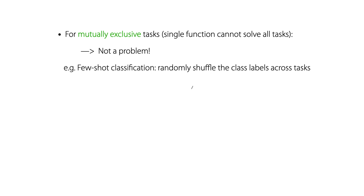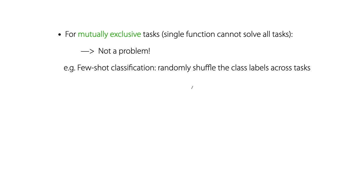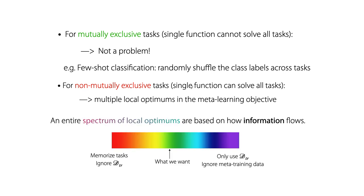Can we do something about it? Yes. For mutually exclusive tasks, by which I mean a single function cannot solve all tasks, the memorization is not a problem. For example, in few-shot classification, we create mutually exclusive tasks by randomly shuffling the class labels across tasks. However, for non-mutually exclusive tasks, there could be multiple local optimums in the meta-learning objective.